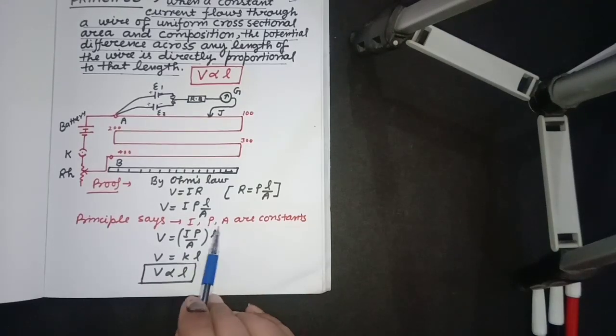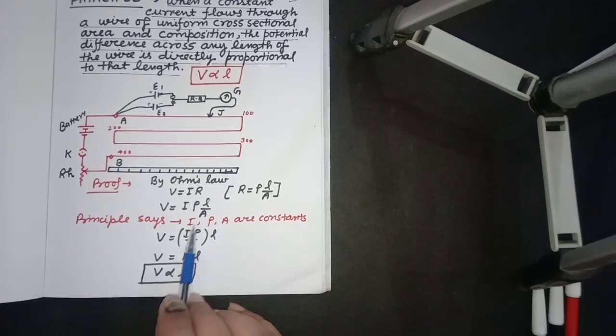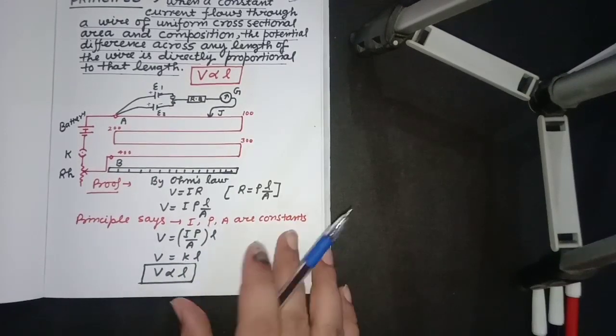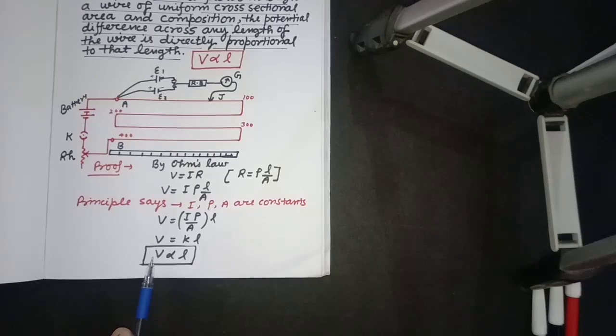The cross-sectional area is uniform and constant. Resistivity for a particular wire is also constant. These are all constant. Therefore, the potential difference is directly proportional to the length of the wire. So this is the proof.